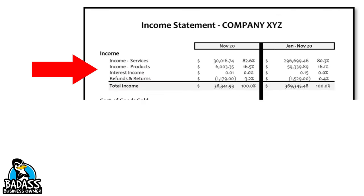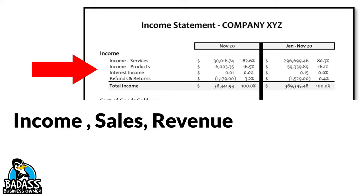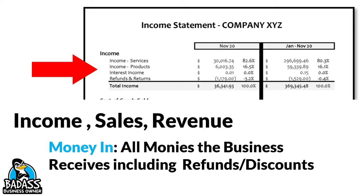The first section is the income line. The income section is going to be called either income, sales, or revenue. Basically it's all the money that is coming in to the business. So if you're receiving money in any way, shape, or form, it's going to be right here under the income section. Every P&L is a little bit different, but most of the time it's going to be called income.